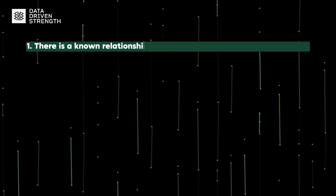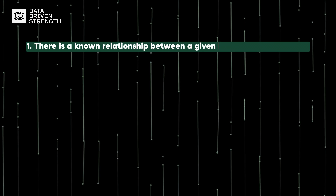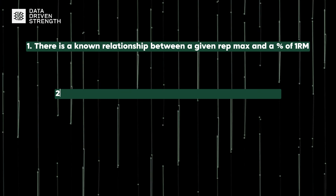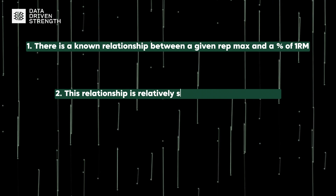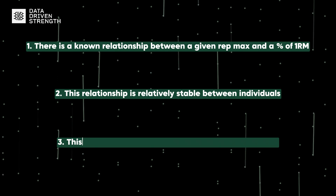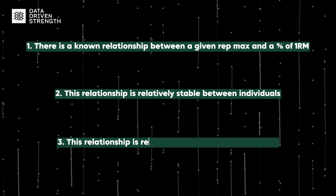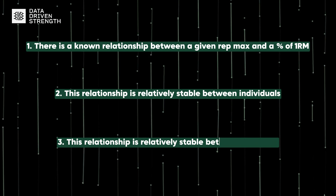As I've gone through some of these details related to estimated 1RM, you can probably see that it relies on a few assumptions. One, there is a known relationship between a given rep max and a percentage of 1RM. Two, this relationship is relatively stable between individuals. And three, this relationship is relatively stable between exercises. To be frank, until now, all of these assumptions were unjustified.